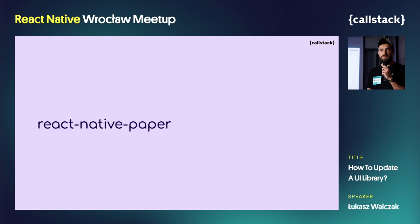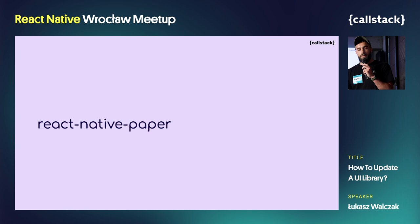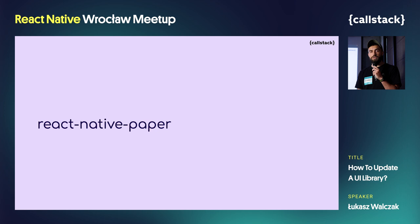As you may have guessed, the updating process we applied was introducing the new material design generation called Material U into the React Native Paper library. But what is the React Native Paper library? It's a cross-platform UI kit library containing a collection of customizable and production-ready components for React Native, which follow Google's Material Design guidelines.